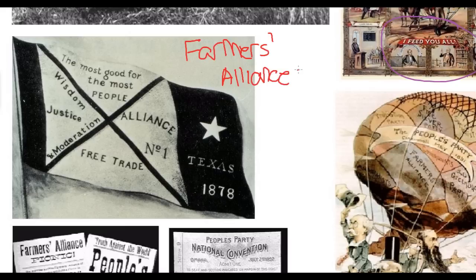The Farmers' Alliances were much more of a political and economic association than the Grange. There were really two branches — a southern branch, especially in Texas, and a midwestern branch centered in Chicago. They advocated an elaborate social and economic program, including wanting the federal government to create a system of warehouses where farmers could store grain and receive loans against its value — called the sub-treasury plan — allowing farmers greater economic control.